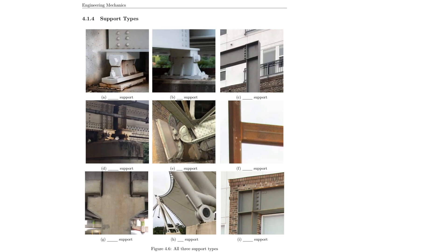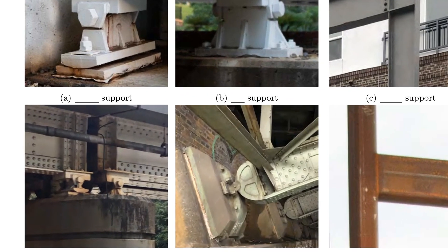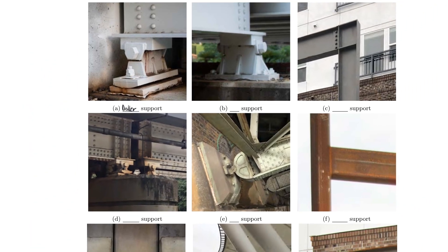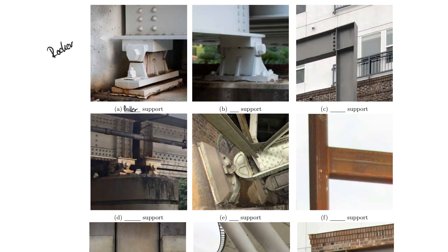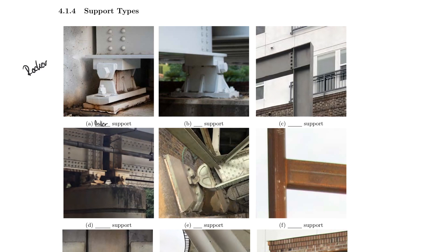Let's call this a roller support — sometimes also called a rocker. The picture speaks for itself as to why it's called a rocker. Pay close attention: there is an axis in here about which the system is free to rotate. The system is also not restricted to move horizontally, so there's a degree of freedom in that direction. The only thing the roller prevents is motion in the vertical direction — that is the only force it resists.